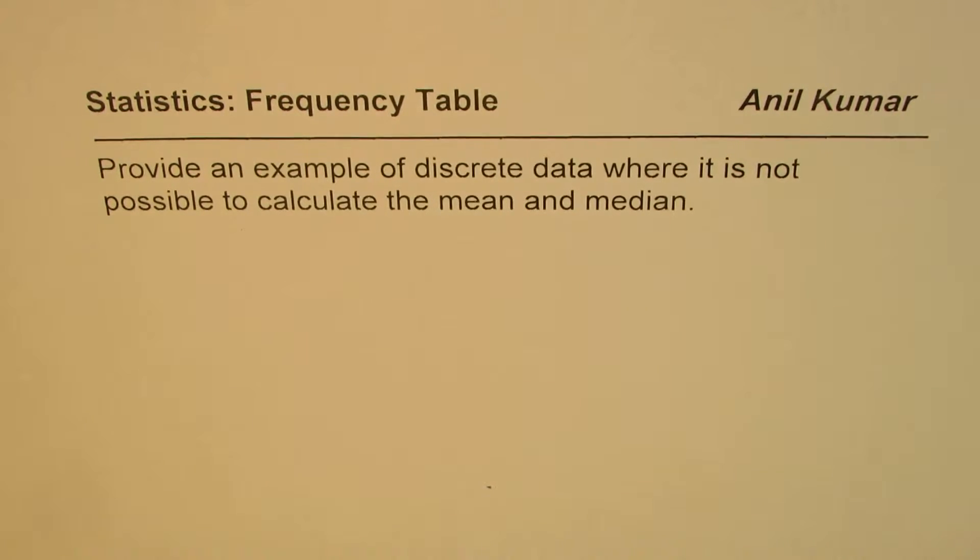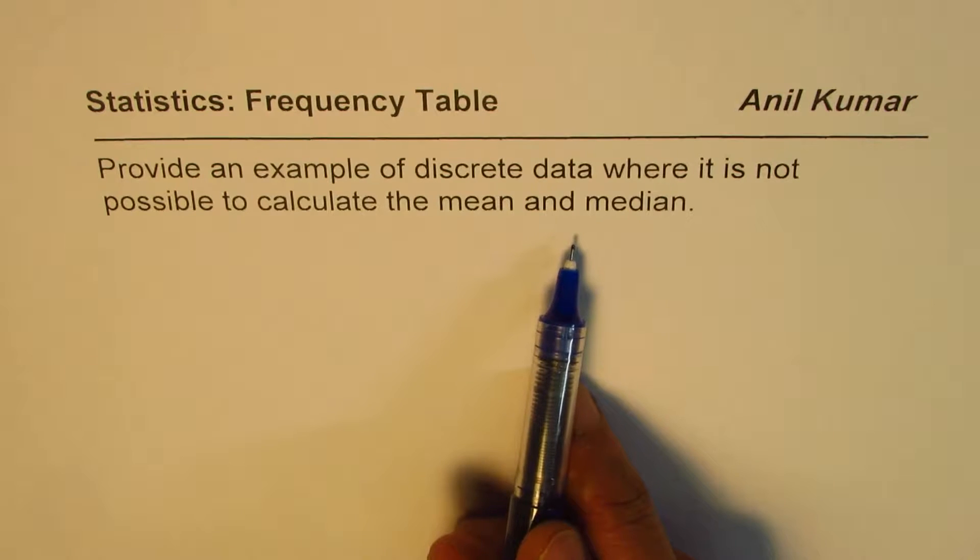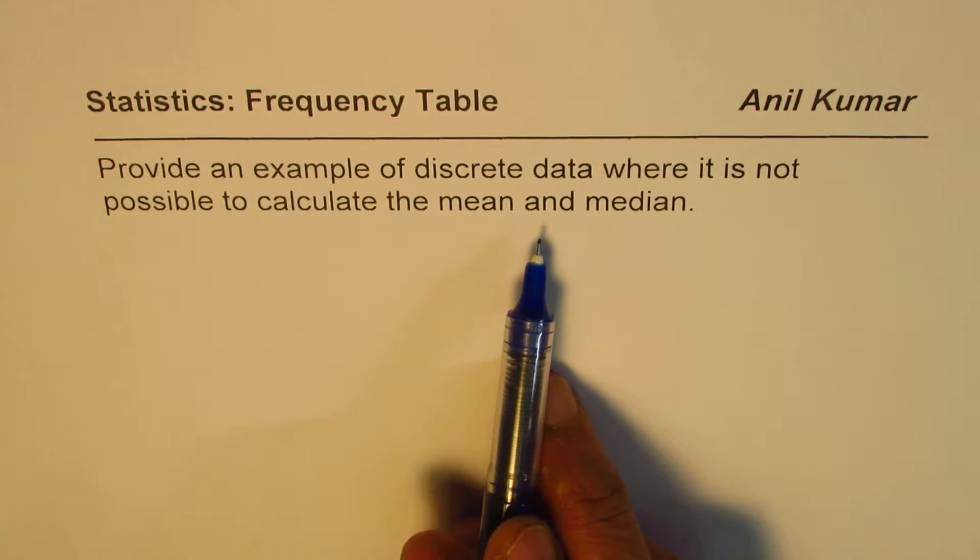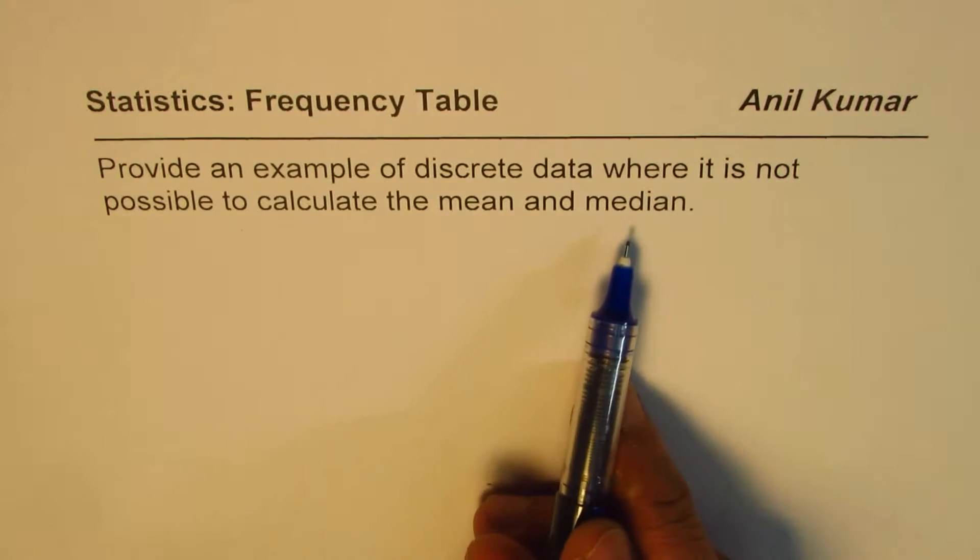I hope you remember that we are talking about three measures of central tendencies. These are mean, mode and median. Now in this example, we need to provide a case where mode can be measured or calculated but it is not possible to calculate mean and median.